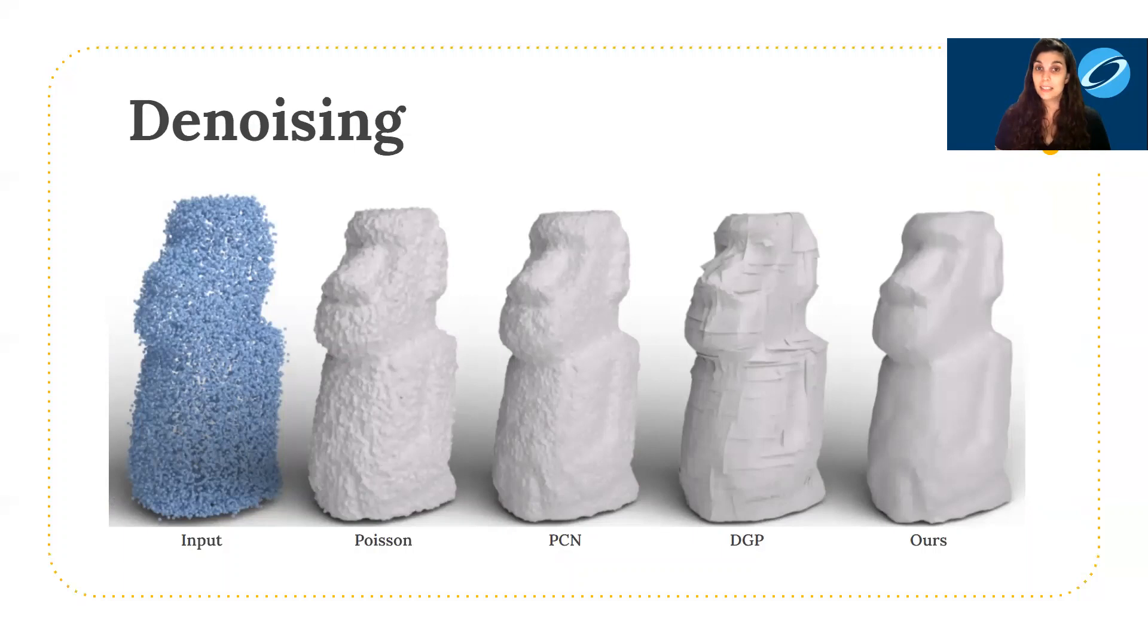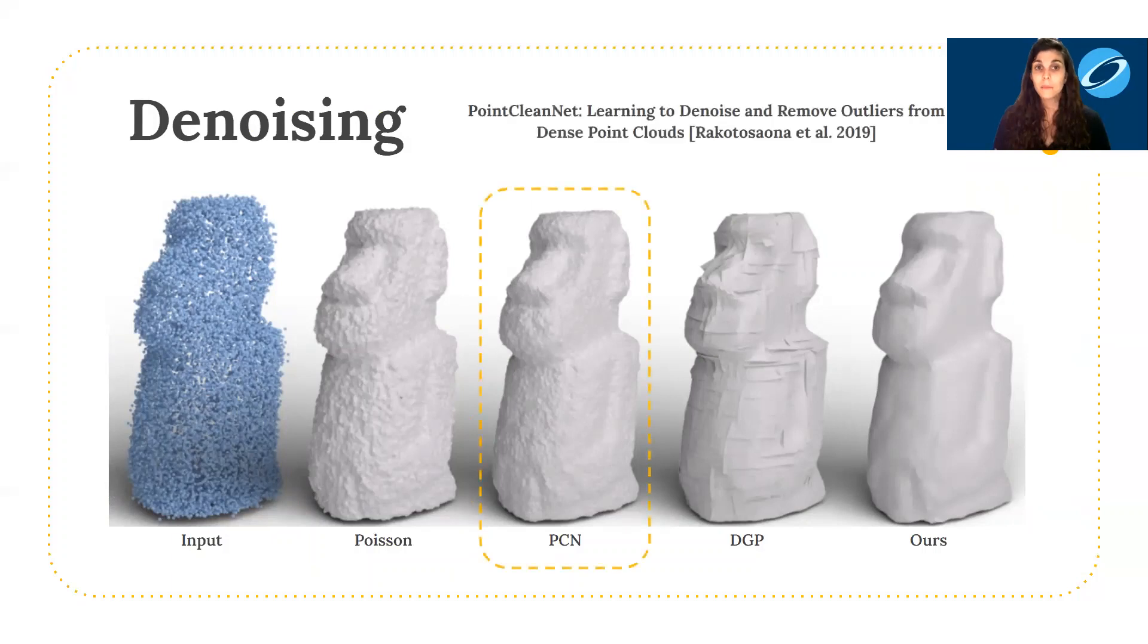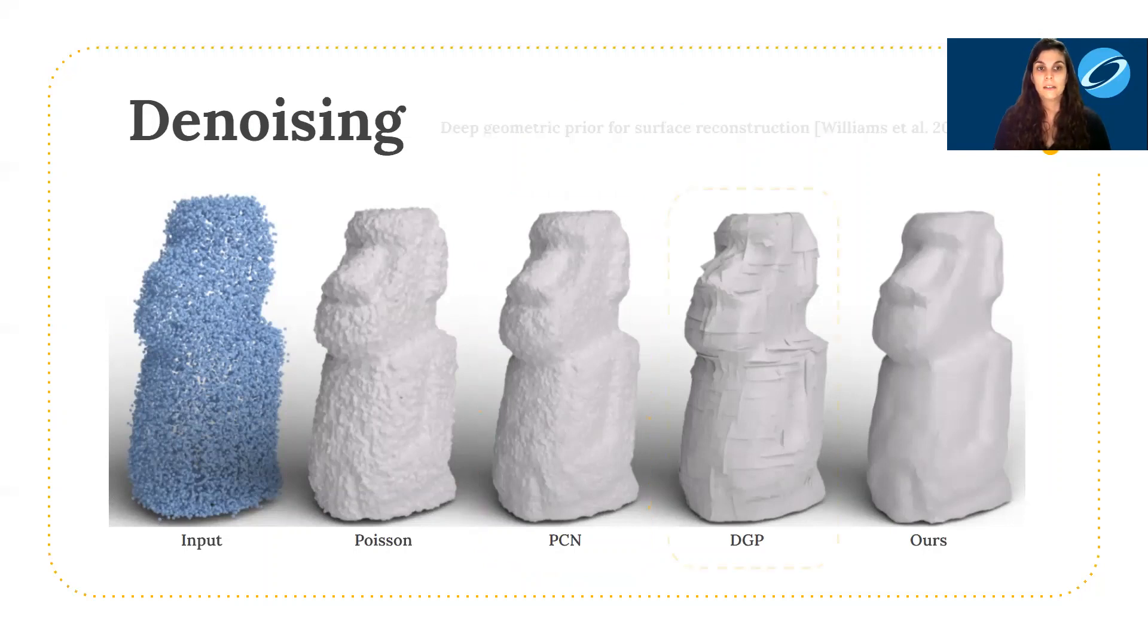We compared against existing techniques on the task of denoising. The most popular method for surface reconstruction is Poisson reconstruction, which uses a type of smoothness prior. In this case, it overfits to noise. PointCleanNet is a data-driven deep learning technique for denoising point clouds, and we apply Poisson reconstruction for visualization purposes. Deep Geometric Prior also learns reconstruction from a single shape, but has a few differences compared to our technique. First, it optimizes local patches to the input point cloud, so it doesn't produce a watertight surface. Second, each local patch is optimized separately without any global shared weights. Finally, we can see that the self-prior naturally removes noise from the corrupted input.